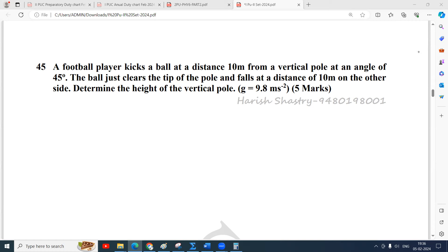We will visualize the whole problem. Suppose this is a vertical pole with height H, which we don't know. The football player kicks the ball so it follows a parabolic path. This is the horizontal, this is the vertical, and the initial velocity makes an angle of 45 degrees with the horizontal.